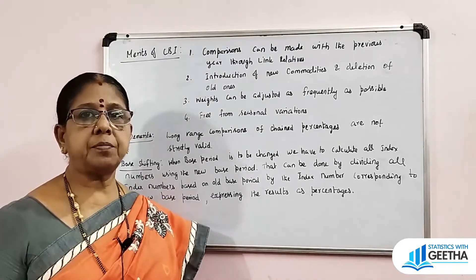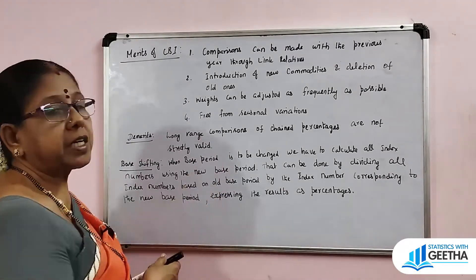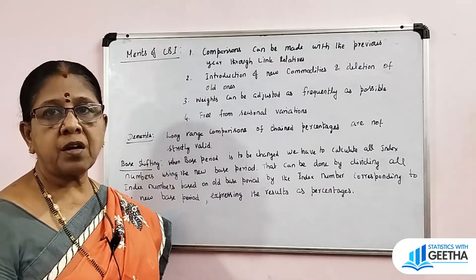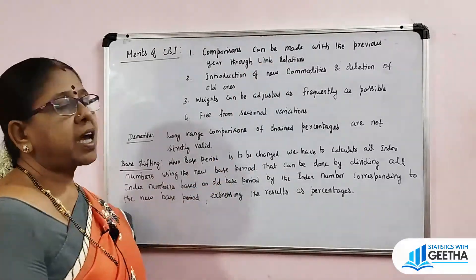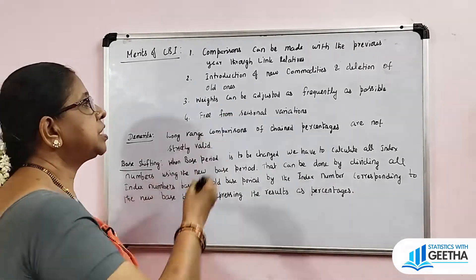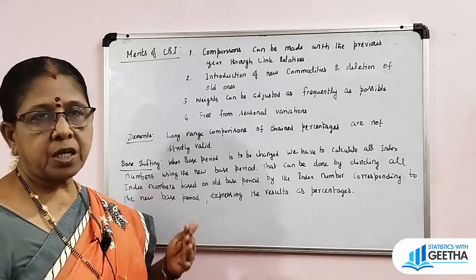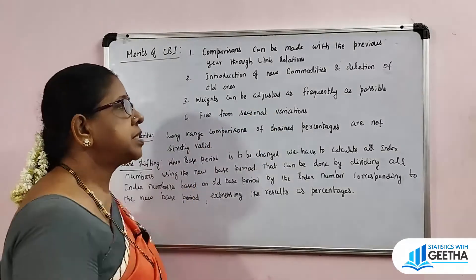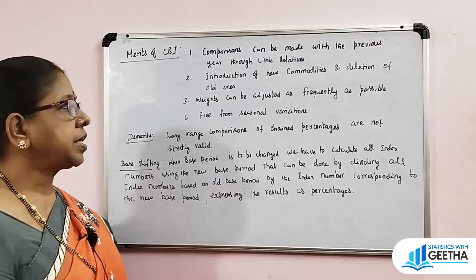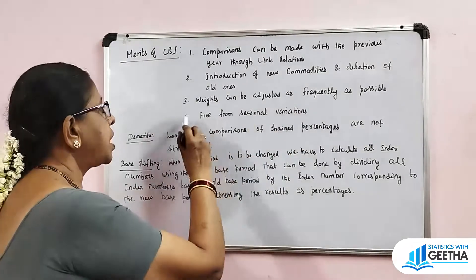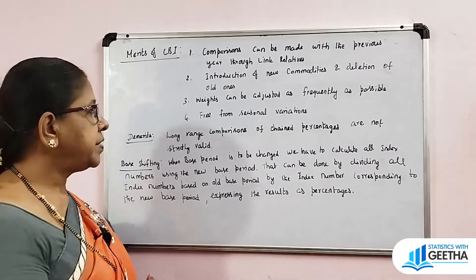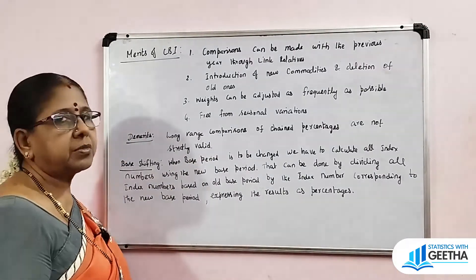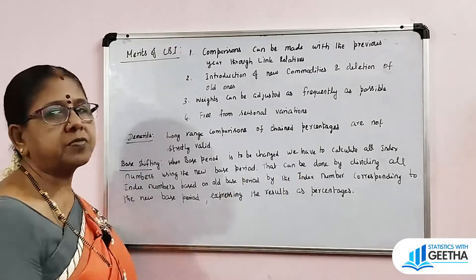What are the merits? Comparisons can be made with the previous year. New commodities can be introduced and old ones deleted easily. The weights can be adjusted as frequently as possible. Chain-based index numbers are free from seasonal variations. However, a demerit is that long-range comparisons of change percentages are not strictly valid.